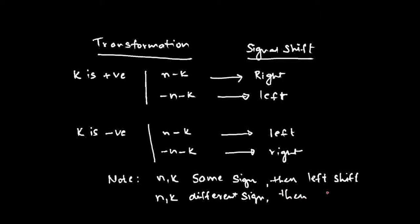If you want to shift the signal to the right, we say right shift. You can check that here — n has a positive sign and k has a negative sign, so n and k have different signs. If n and k have different signs, then you should shift to the right.